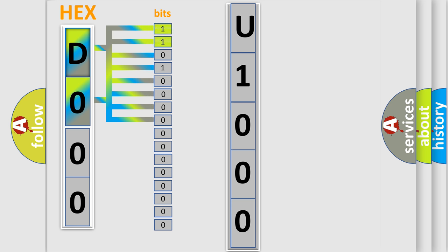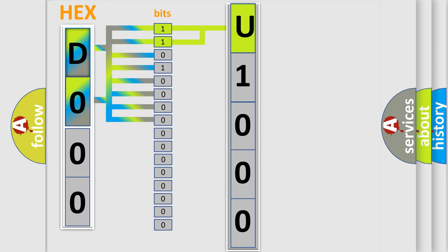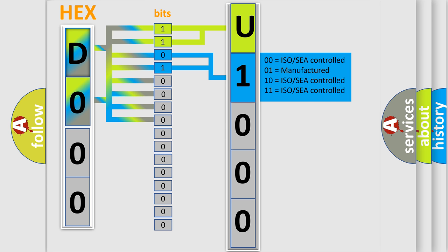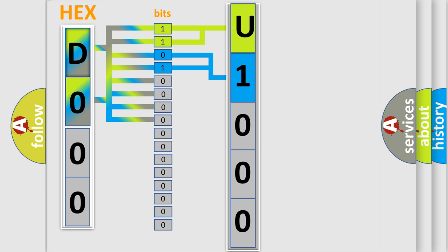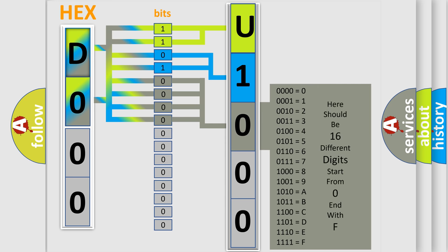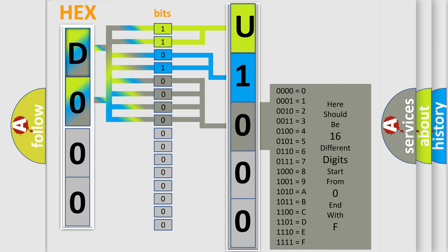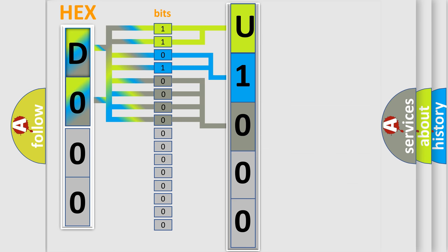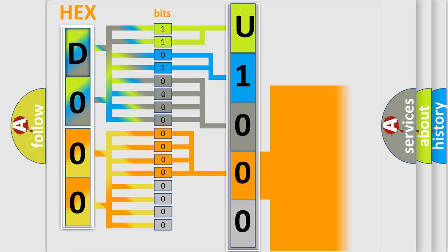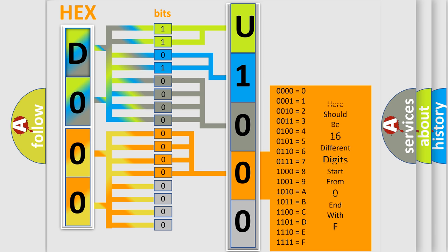By combining the first two bits, the basic character of the error code is expressed. The next two bits determine the second character. The last bits of the first byte define the third character of the code. The second byte is composed of a combination of eight bits. The first four bits determine the fourth character of the code, and the combination of the last four bits defines the fifth character.